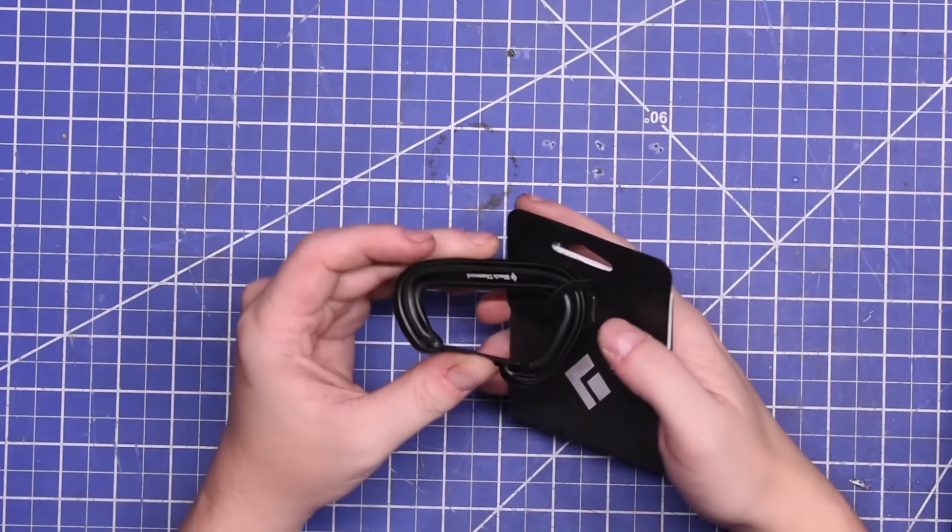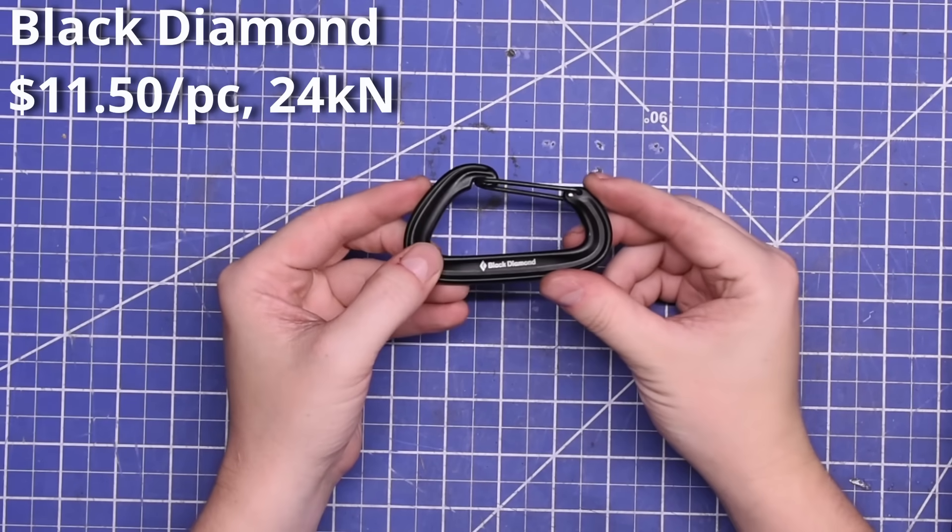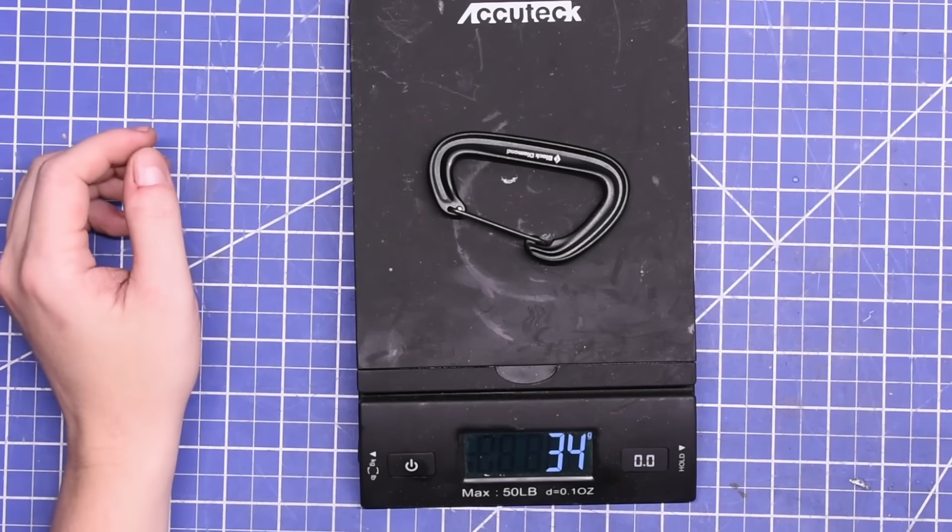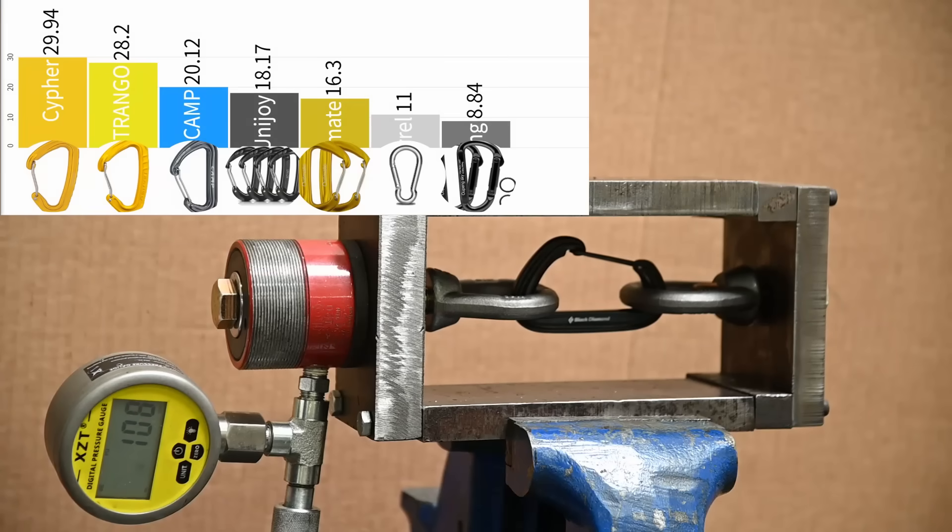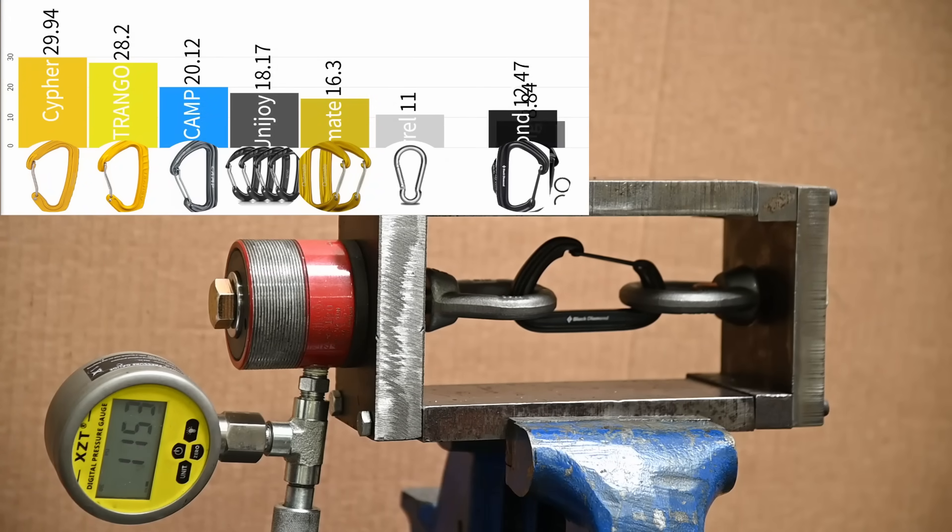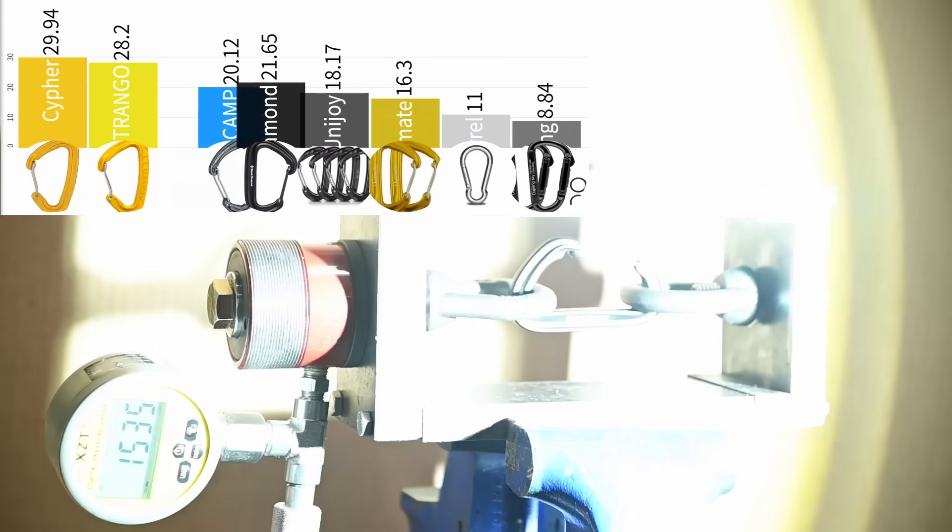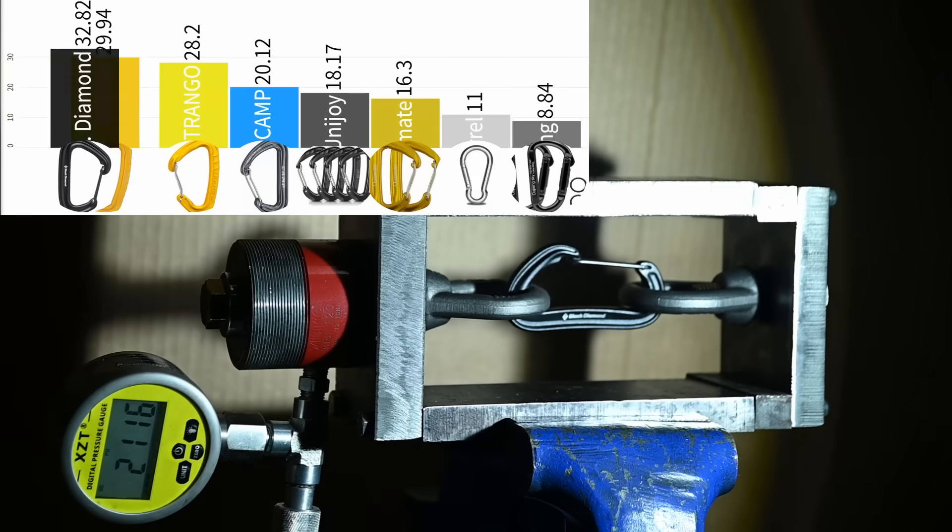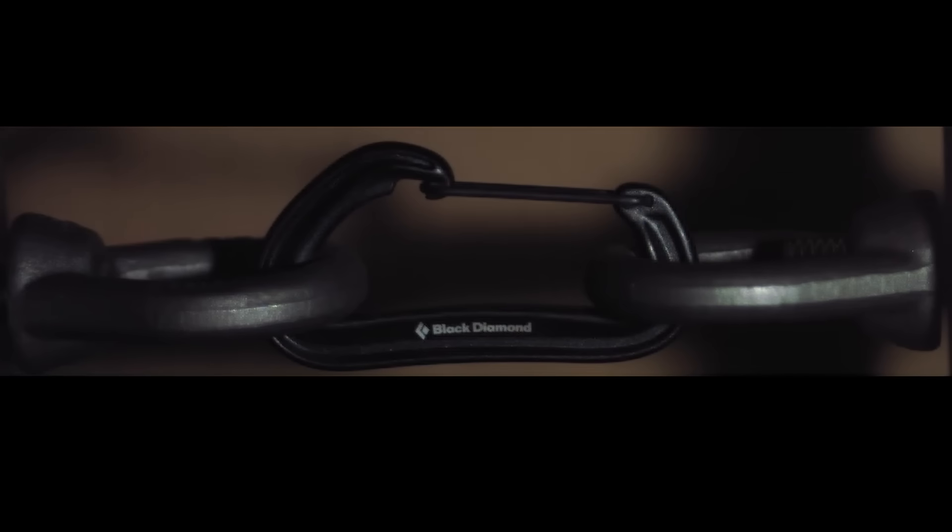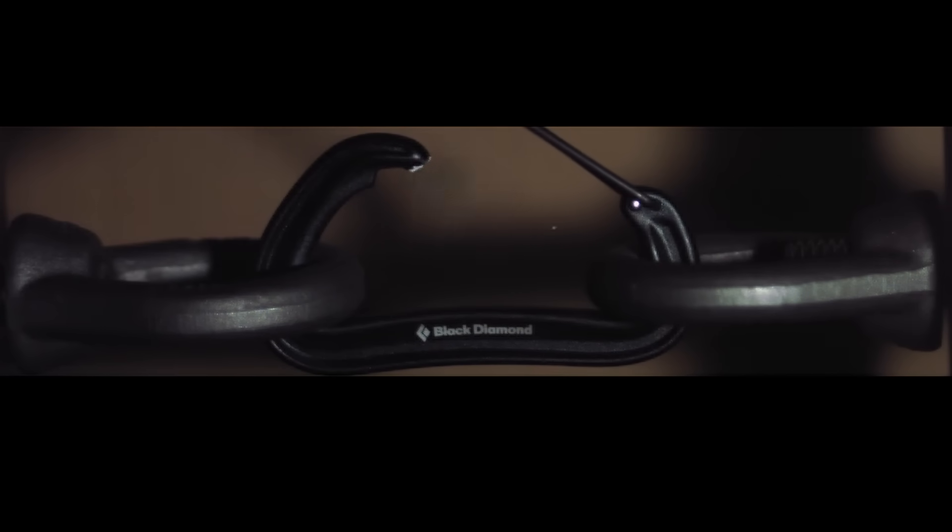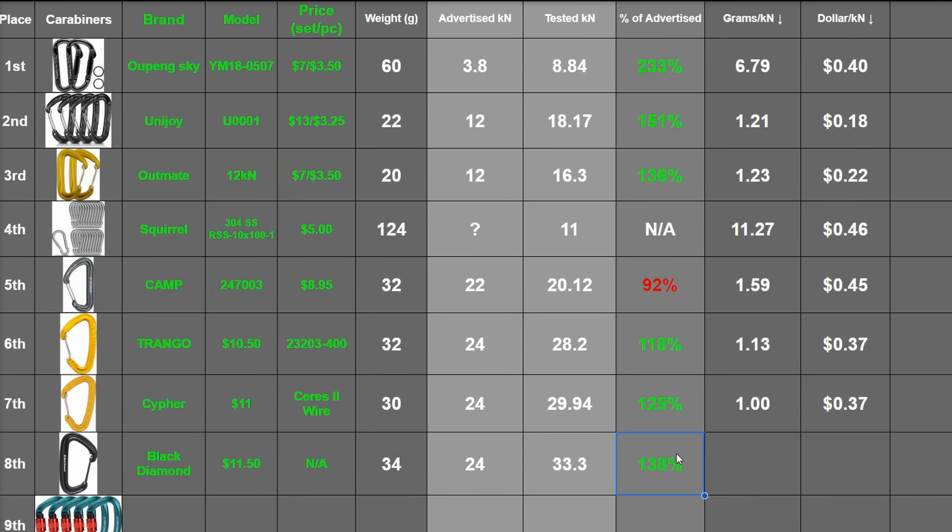Next we have the black diamond D-shape wire gate, also 24 kilonewtons. It's a carabiner from a brand you might have heard of. I don't know, let's blow it up. While the explosion itself wasn't that impressive, man, 2,703 psi makes for 33.3 kilonewtons, around 7,500 pounds force. That's incredible. 138% of the numbers on the side. Nice.